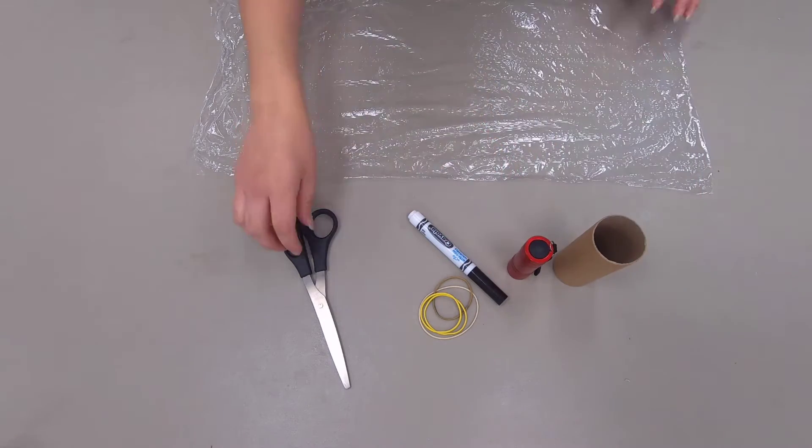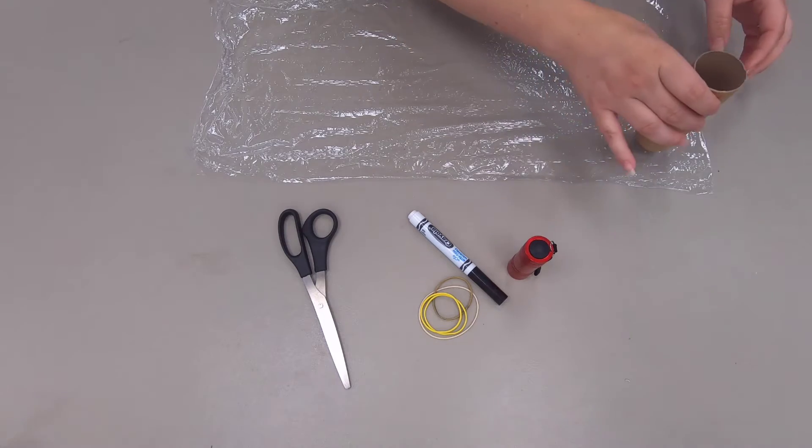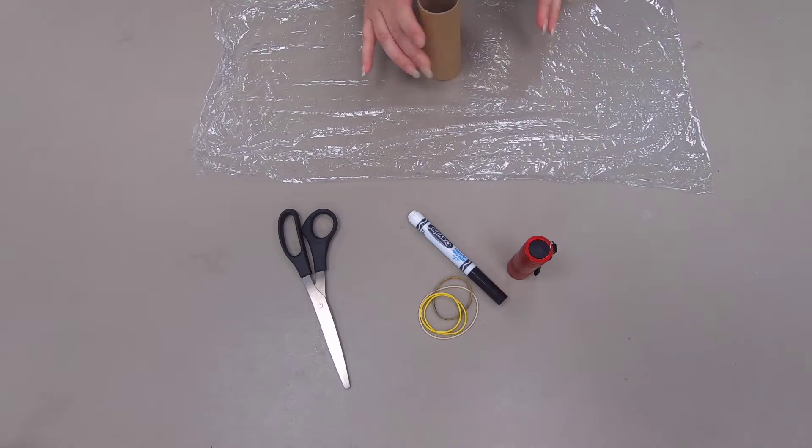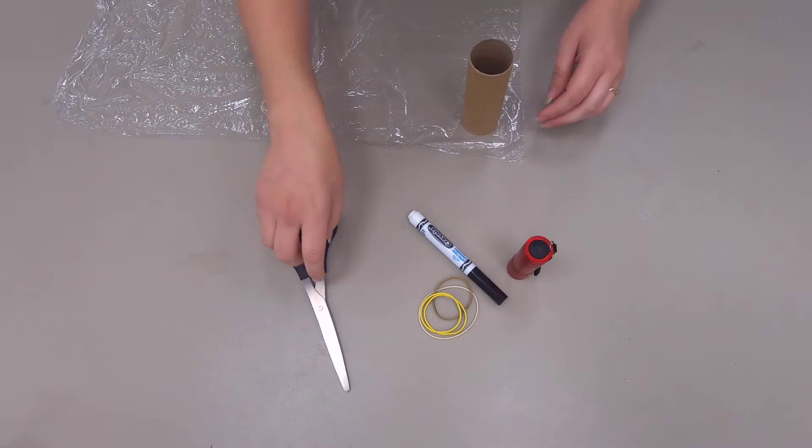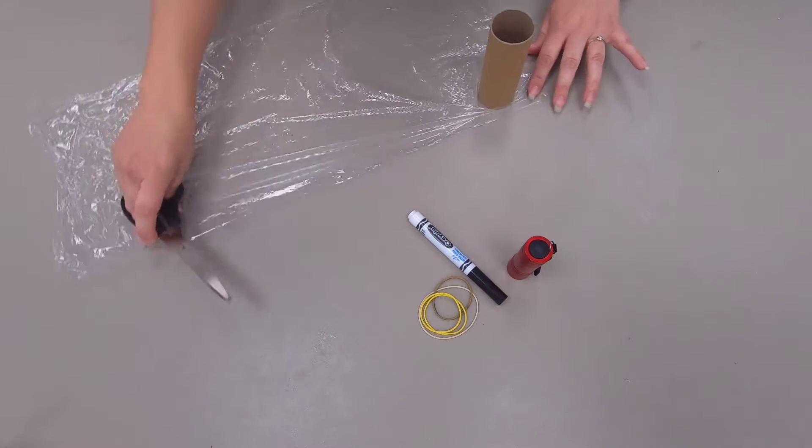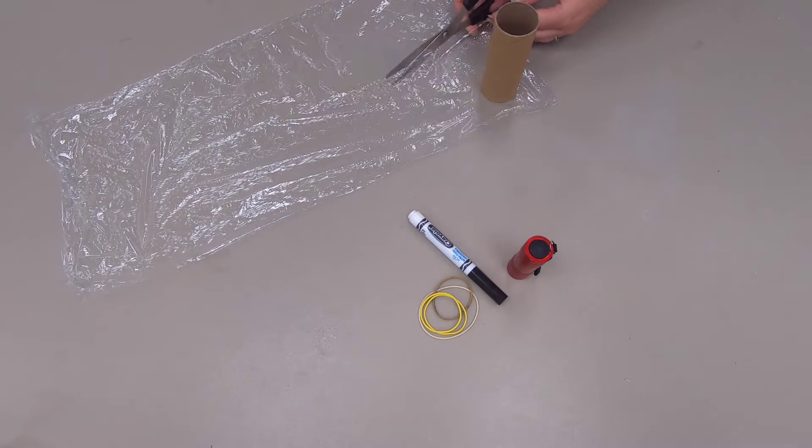So the first thing we're going to do is I'm going to need to have cling wrap cover the outside of this. I don't need this giant piece of cling wrap, I just need a little piece. So I'm going to take this, kind of do a little measurement, and I'm just going to cut a little corner of my cling wrap.